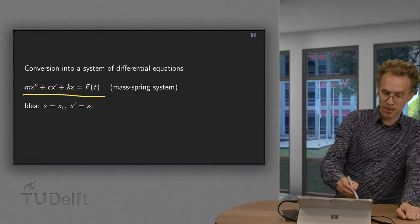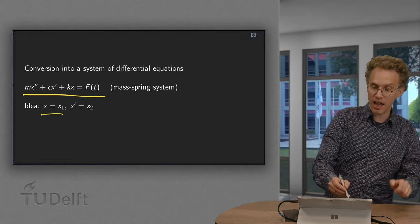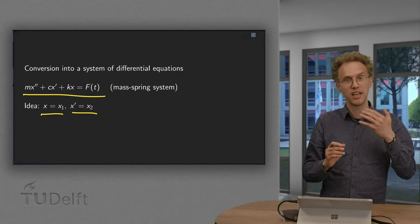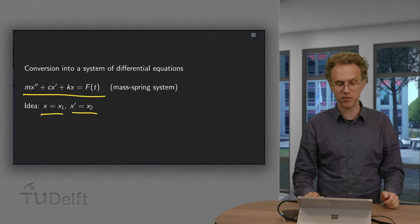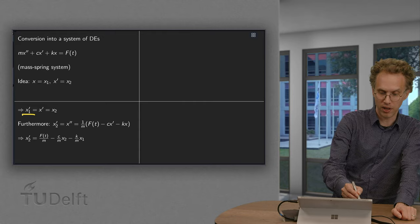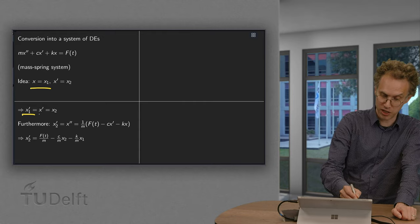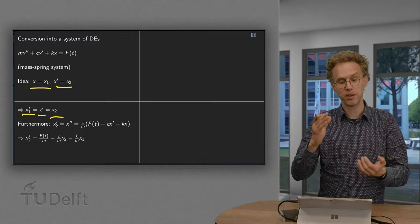We set x equal to x1, first new variable. And x prime equals x2, a second new variable. With this definition, we get x1 prime. Well, x equals x1, so x1 prime equals x prime. And x prime equals x2, so x1 prime equals x2.